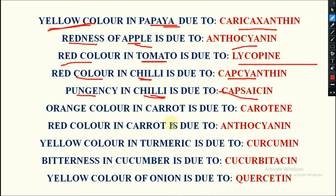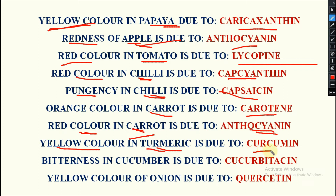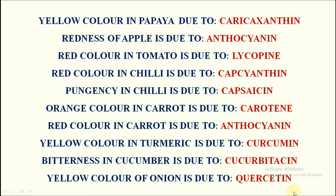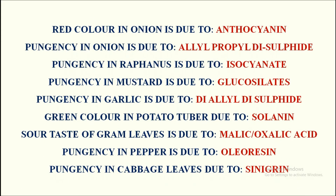In carrot, the orange color is due to carotene, and the red color is due to anthocyanin — so redness in apple and redness in carrot are both due to anthocyanin. In turmeric, yellow color is due to curcumin. In cucumber, bitterness is due to cucurbitacin — very important, which generally comes in exams. In onion, the yellow color is due to quercetin. Try to remember these or take a screenshot.